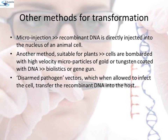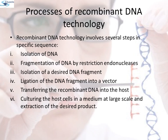Now that we have learnt about the tools for constructing recombinant DNA, let us discuss the various processes facilitating recombinant DNA technology. Recombinant DNA technology involves several steps in a specific sequence: isolation of DNA, fragmentation of DNA by restriction endonucleases, isolation of a desired DNA fragment, ligation of the DNA fragment into a vector, transferring the recombinant DNA into the host cell, culturing the host cell in a medium at large scale, and extraction of the desired product.